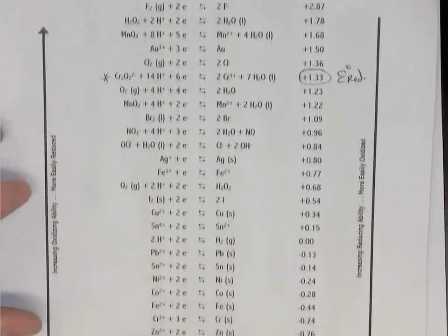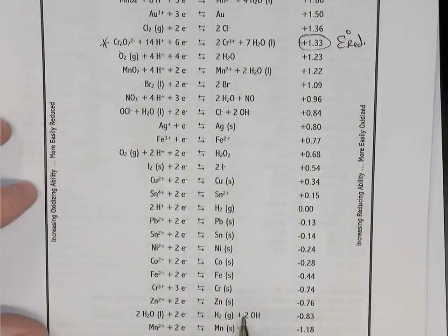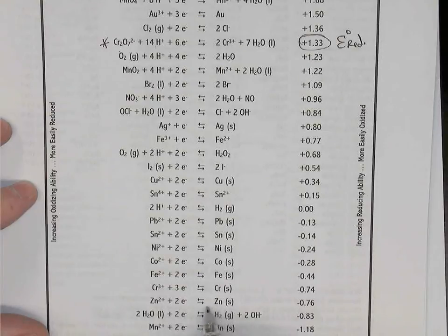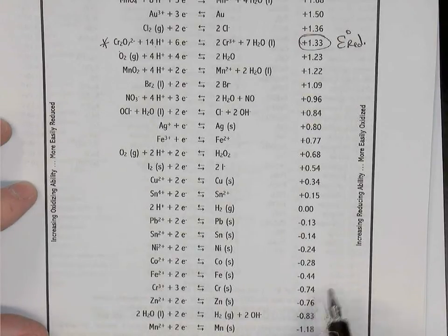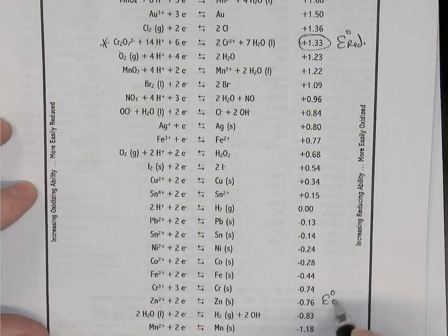Down below it, way down at the bottom of the table here, near the bottom, we see the zinc reaction. But we notice here it's written as a reduction reaction. So we're going to need to read it in reverse. Zinc becomes zinc 2+. So this potential, which is a reduction potential, will simply change the sign and we'll say the oxidation potential is positive 0.76 volts.